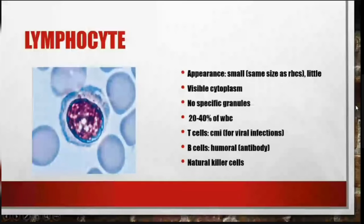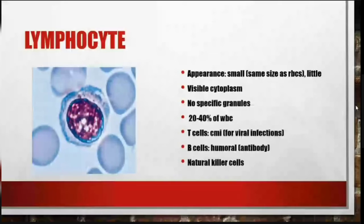Lymphocytes are smaller in appearance with visible cytoplasm and no specific granules, comprising 20 to 40 percent of WBCs. T cells are involved in viral infection and B cells are involved in antibody production. They also include natural killer cells.